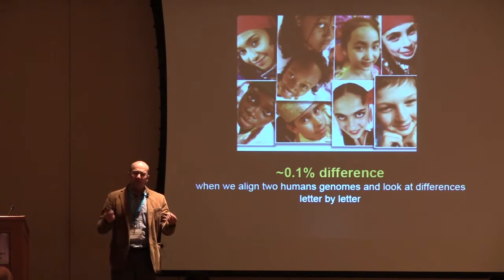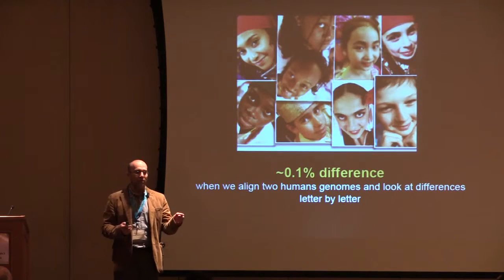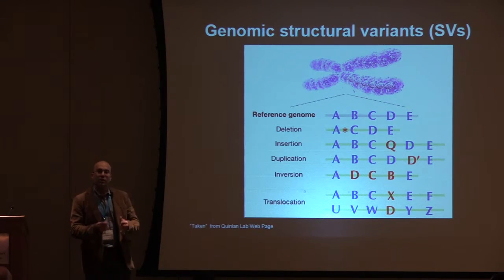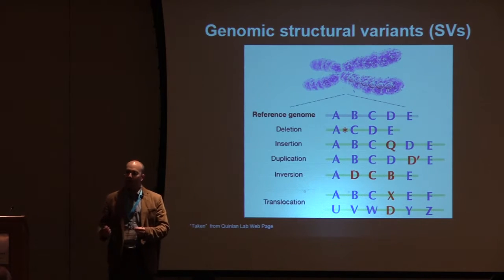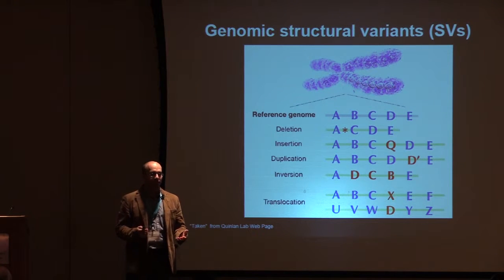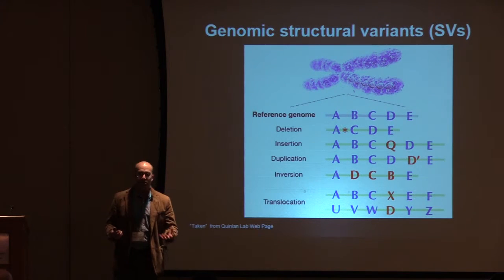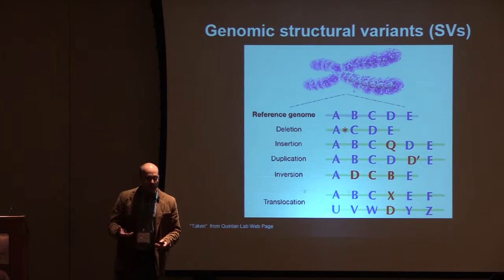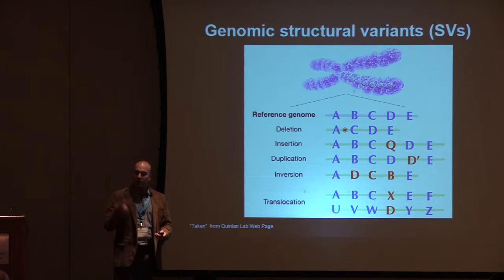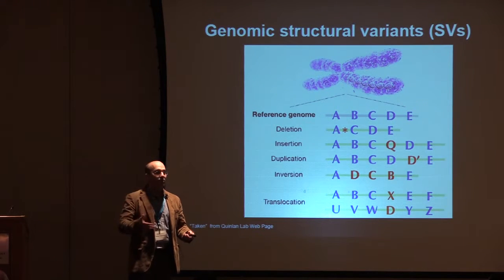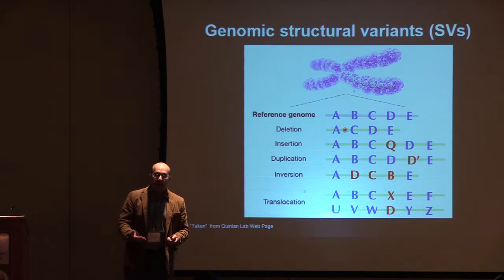Beyond SNPs and GWAS, it becomes very tricky to read out what really matters. To address this, we want to look at a different type of variation that we recently appreciated: much larger events — deletions, duplications, and inversions of large segments of DNA. These are interesting for two reasons: they are big, and because they are big, we assume they have a bigger functional impact.